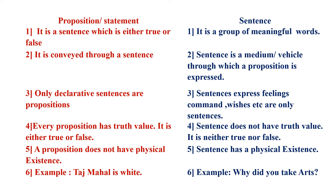Fifth difference: a proposition does not have physical existence, whereas a sentence does — you can see it on the surface. A proposition's meaning is understood rather than seen. Sixth, by example: 'Taj Mahal is white' conveys information, so it is a proposition. Whereas 'Why did you take odds?' is a question that does not convey information, so it is only a sentence.